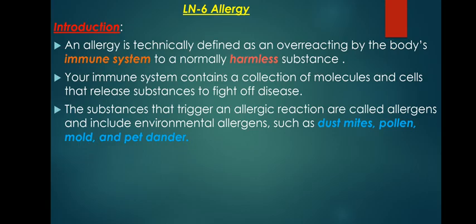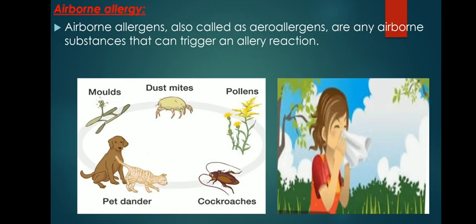What happens in the body during an allergic reaction? Allergens are typically harmless substances that trigger an immune response and cause a reaction in people who are allergic. The allergic reaction occurs if the person inhales, touches, swallows, injects or somehow comes in contact with an allergen. Allergic reactions can be mild, severe or even life-threatening.